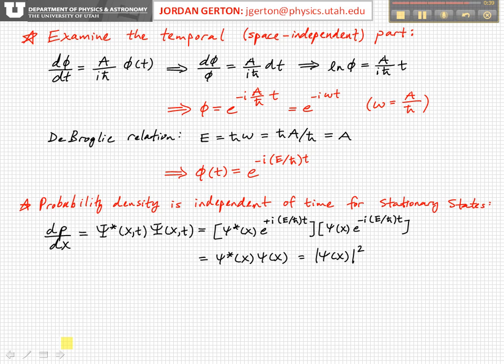We can use this to show that in fact the probability for these stationary states, where we have a time-independent potential, the probability density is independent of time. Remember the probability density is equal to ψ* ψ. If we multiply ψ*, the spatial part, times the complex conjugate of the spatial part, times the complex conjugate of the temporal part...